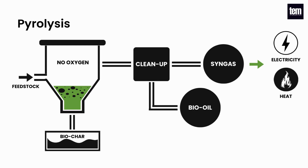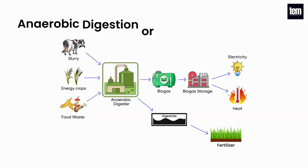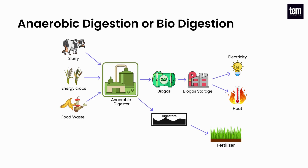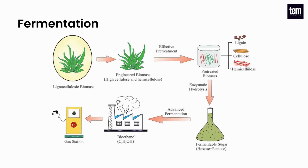Pyrolysis is the thermal decomposition process of biomass feedstock occurring in the absence of oxygen. Since no oxygen is present, the organic material does not combust; instead the chemical compounds decompose into three forms: a liquid called bio-oil, a solid called biochar, and syngas, which can be used for the production of heat, power, and chemicals. Anaerobic digestion is a process where bacteria breaks down organic material in the absence of air to create methane-rich biogas, which can be captured and burned to generate heat and electricity. The remaining byproduct is called digestate and makes a great fertilizer.